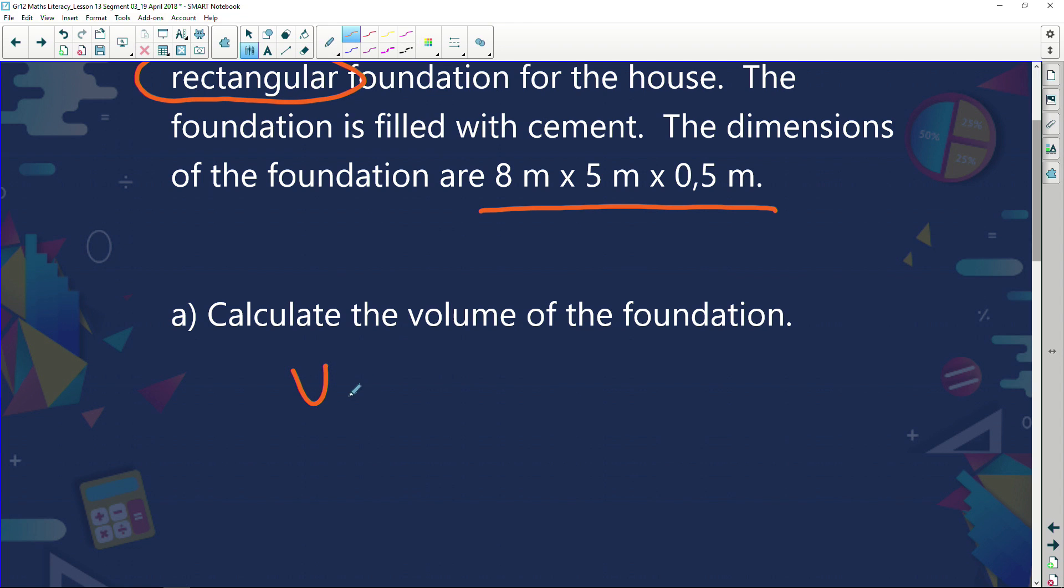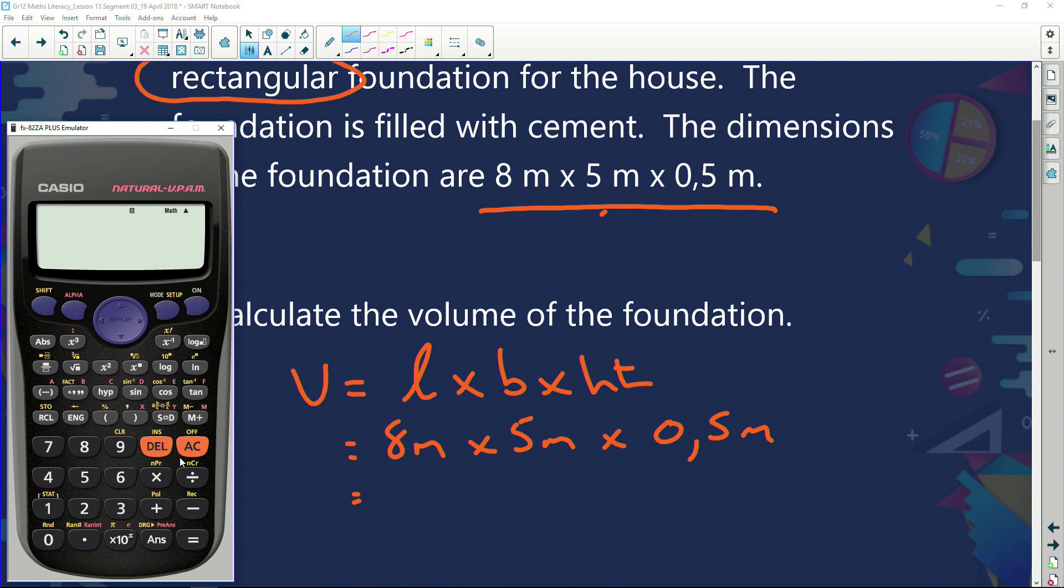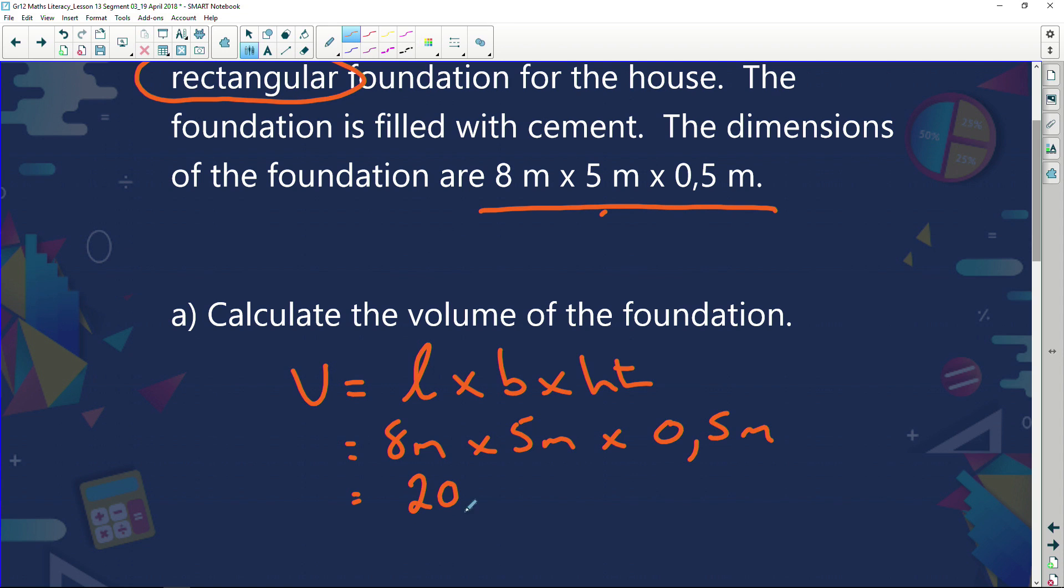Cedric builds himself a house. His foundation is going to be 8 meters by 5 meters and 0.5 meters high. Volume for a rectangular prism is length times breadth times height. My length is 8 meters, my breadth is 5 meters, and my height is 0.5 meters. So all we're going to do is calculate all that on my calculator. 8 times 5 times 0.5 and I get an answer of 20. So 20 meters cubed. Why cubed? Cubed because we've always got to use cubed when we're calculating volume.